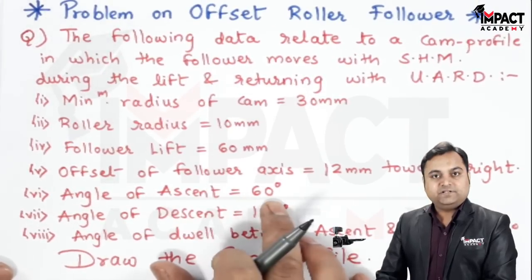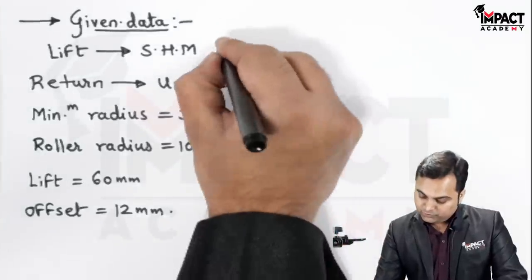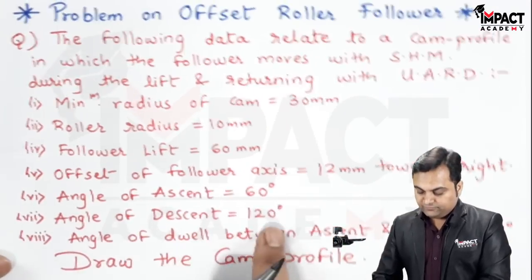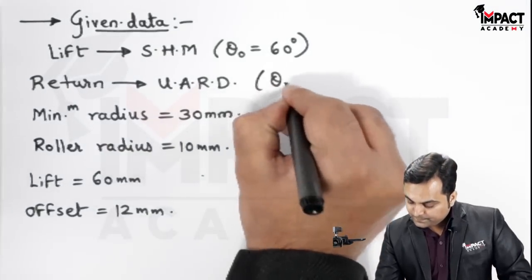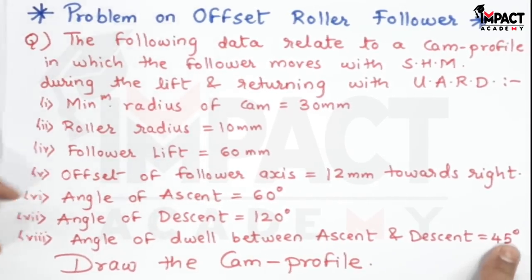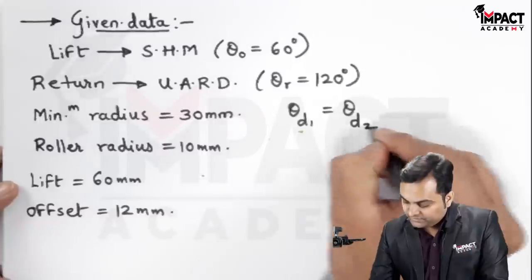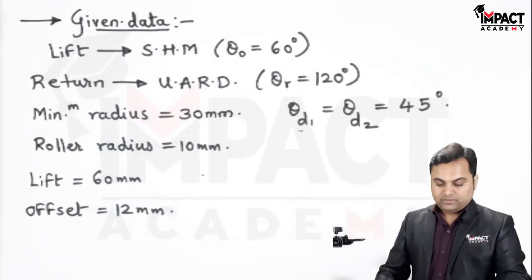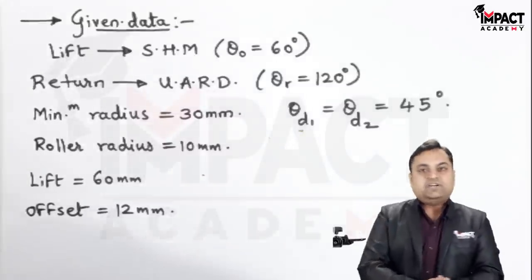Next, angle of ascent (outstroke or lift) given with SHM is 60 degrees, so theta outstroke is 60 degrees. Angle of descent (return) with UARD is 120 degrees. Angle of dwell between ascent and descent is 45 degrees — theta D1 equals theta D2, that is dwell between outstroke and return stroke is 45 degrees each. The question asks us to draw the cam profile. Now let us start with the solution part.